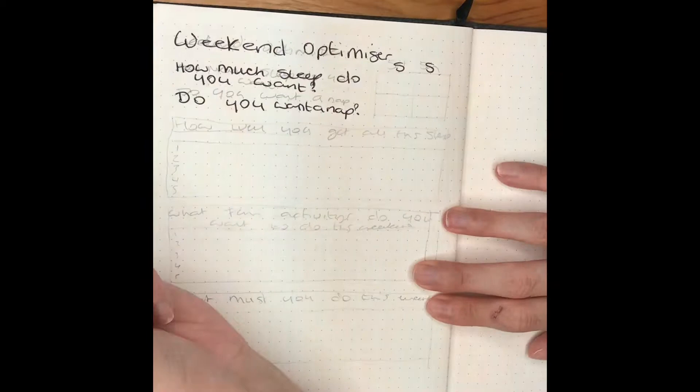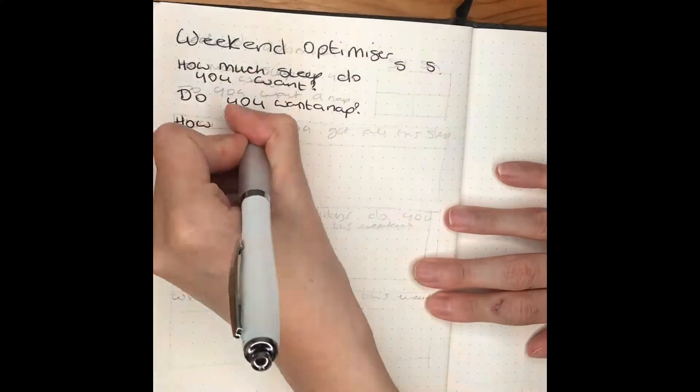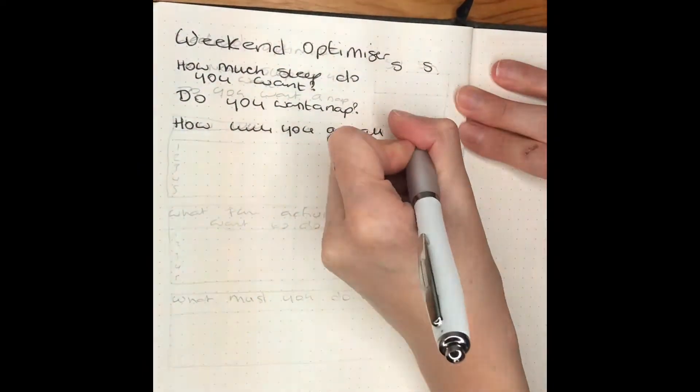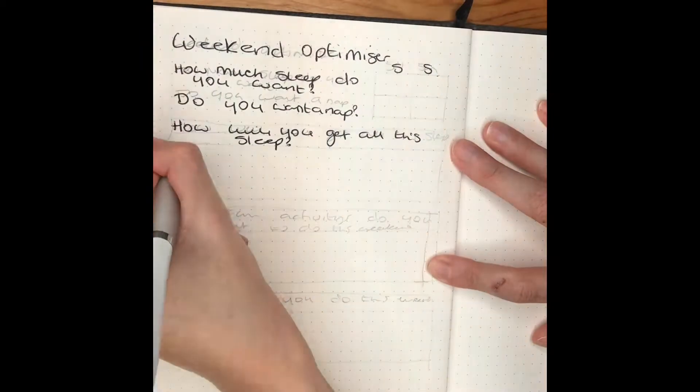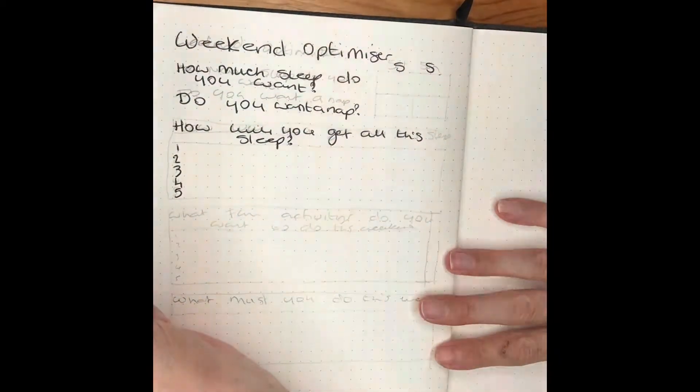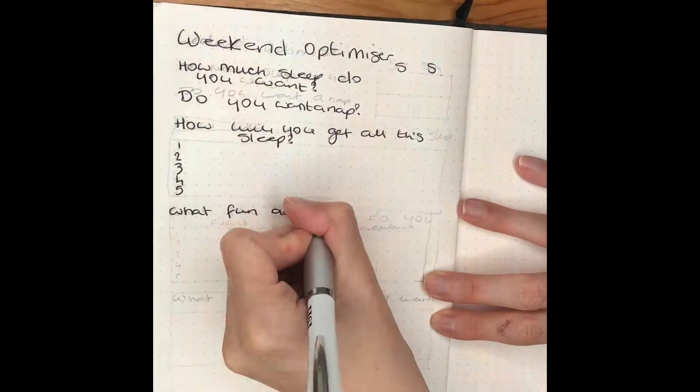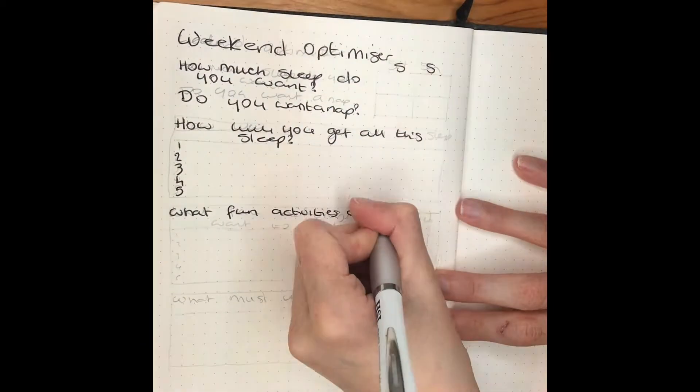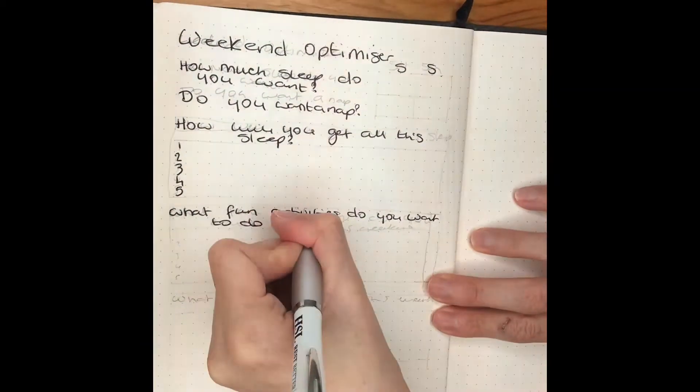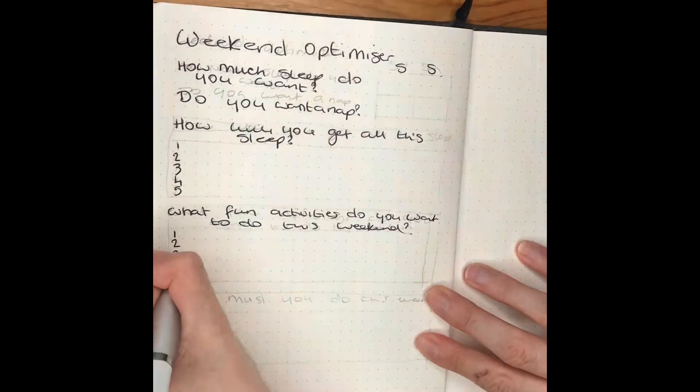My Fitbit tells me how much I actually do, so I could write that in. It says how will I get this much sleep, and then there's five lines. But then the next two boxes are things I want to do that are fun this weekend and things that I must do this weekend. I feel that this was really the part that I wanted to do because I find that some weekends I just do nothing and I don't do anything fun. I just sit in the house in my pajamas, moping about and complaining that the weekend's ended.